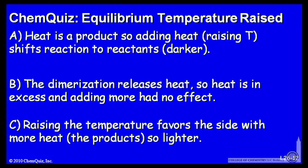Let's look at a possible explanation for each answer. A, heat is a product, so adding heat, raising the temperature, shifts the reaction towards reactants, making it darker. B, the dimerization releases heat, so heat is in excess and adding more heat has no effect. Or C, raising the temperature favors the side with more heat, the products, so it gets lighter. Think about those three and make another selection.